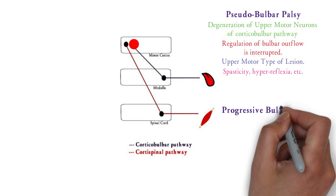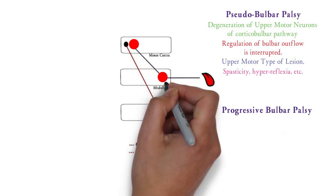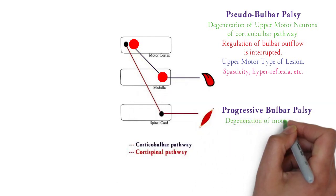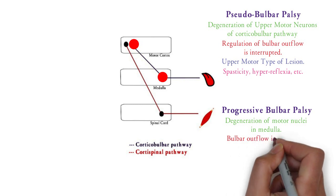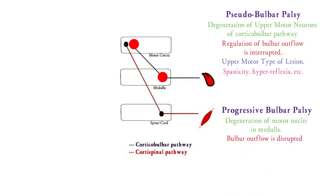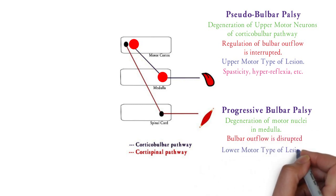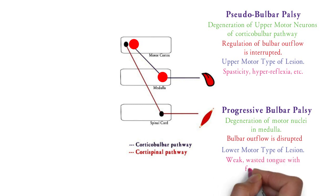The next is progressive bulbar palsy. Here there is degeneration of motor nuclei in the medulla, so the bulbar outflow itself is interrupted. This is a lower motor neuron type of lesion. The symptoms will be a weak and wasted tongue with fasciculations. So these both types were upper and lower motor neuron diseases involving the corticobulbar pathway.